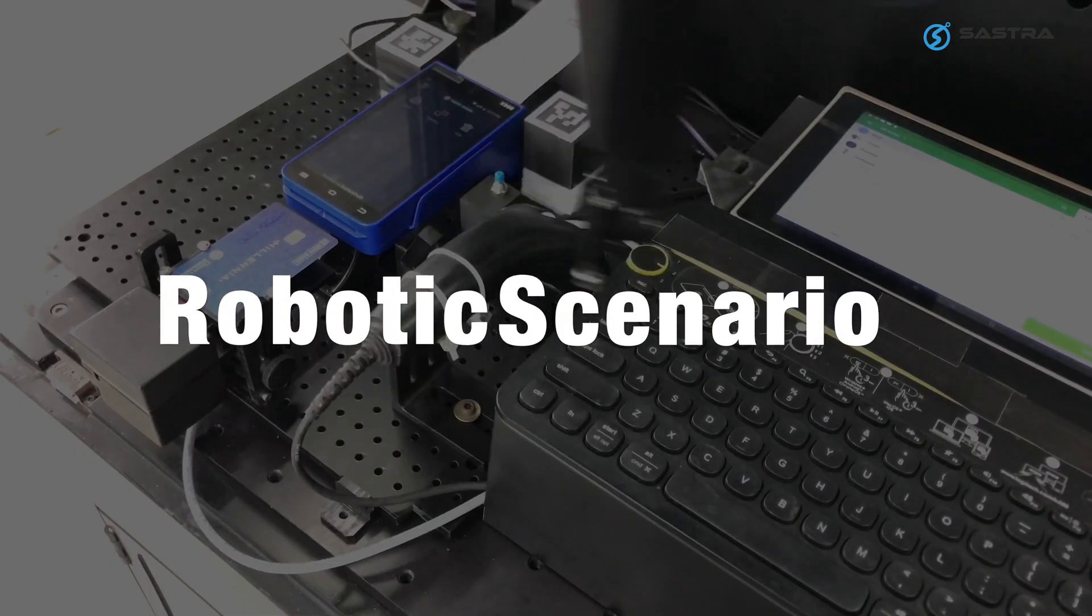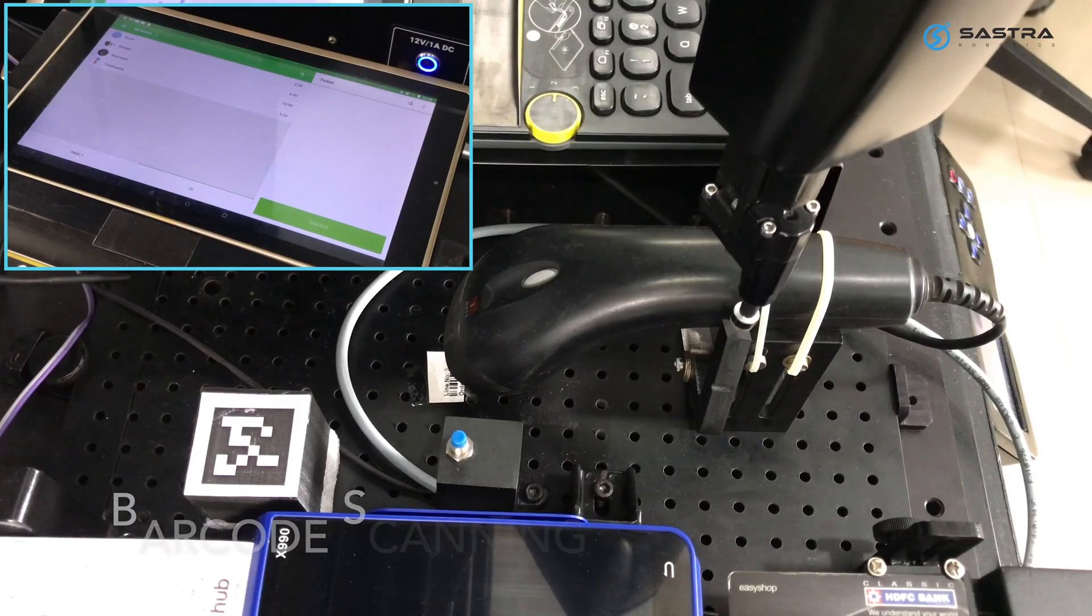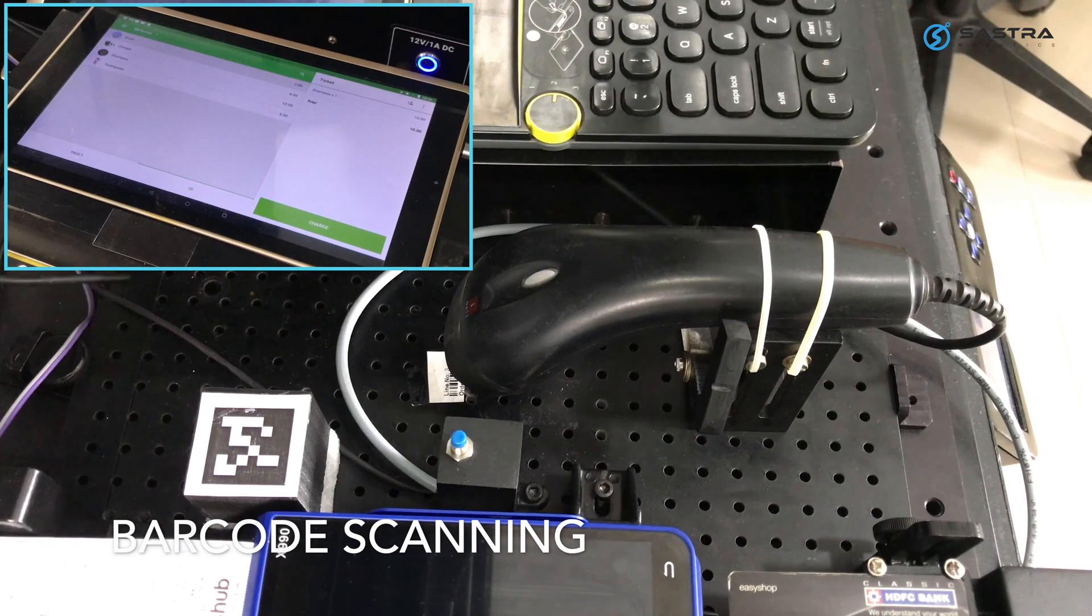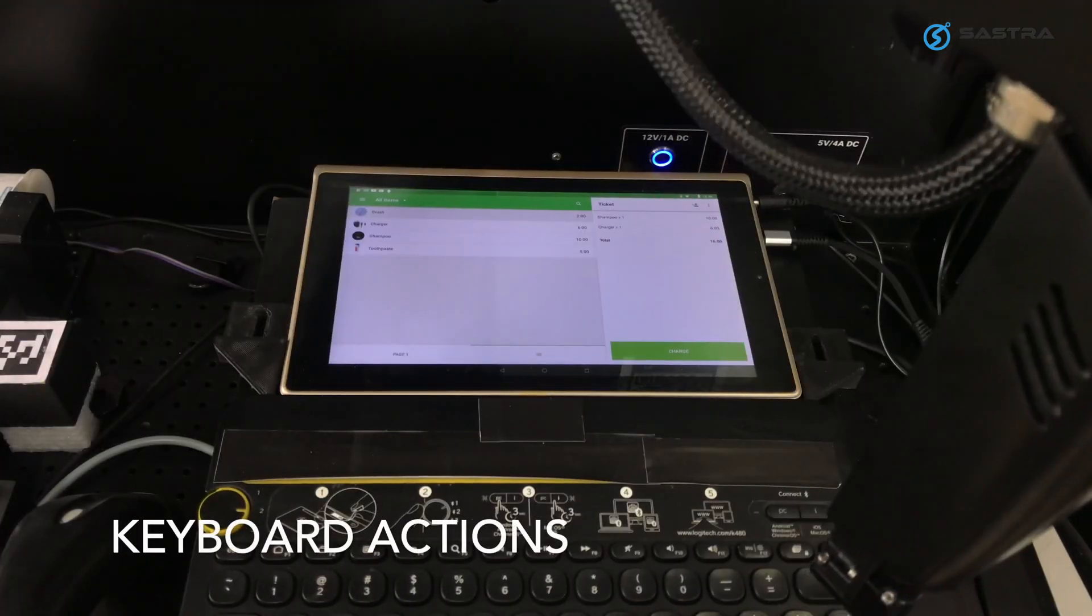Let's see how the scenario can be replicated using the robotic system. The robot starts with enabling the barcode scanner to scan for the barcode. Then it enters products with keystrokes on the keyboard.